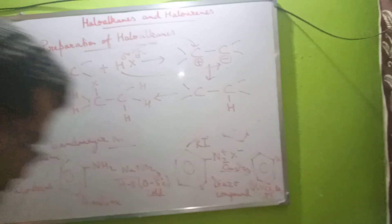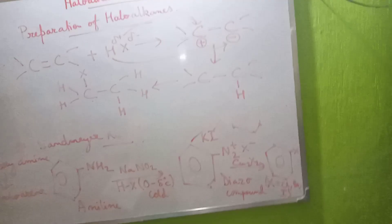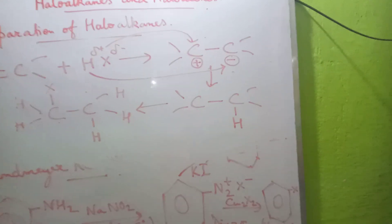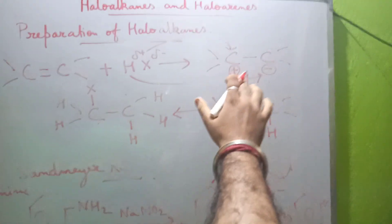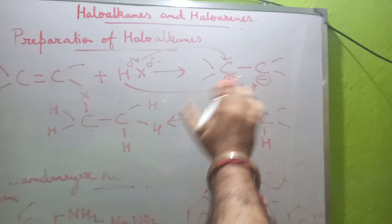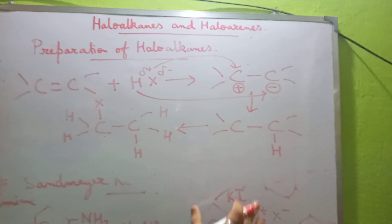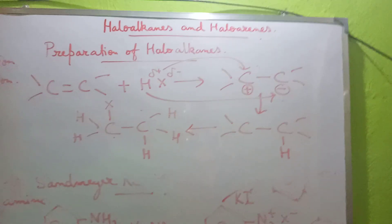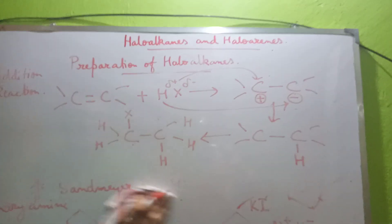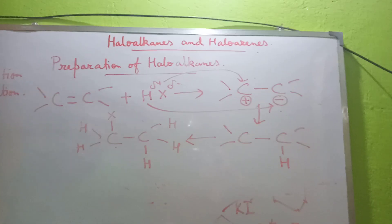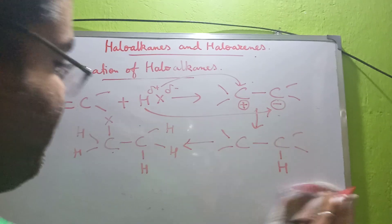As you can see, this is a symmetrical alkene, so the plus and minus charge does not have a very important factor here. But if we now talk about an unsymmetrical alkene, what would it be?